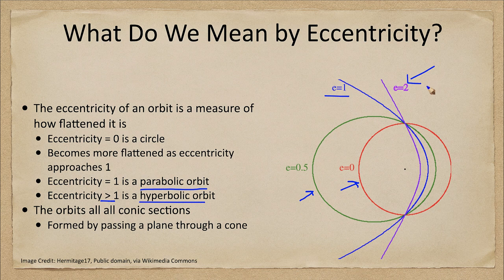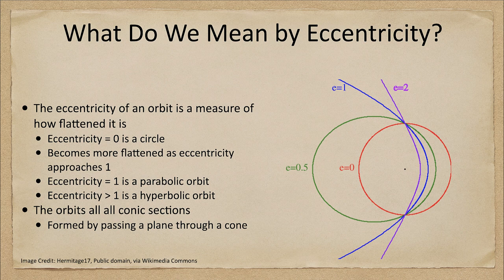So we can see those different types of orbits, and this is how Isaac Newton generalized Kepler's work — showing that orbits are not just ellipses but are actually conic sections.